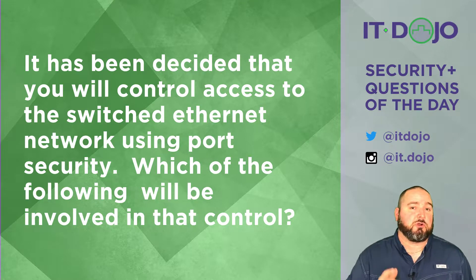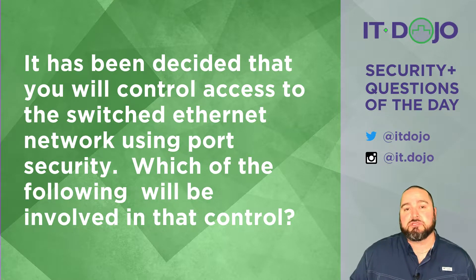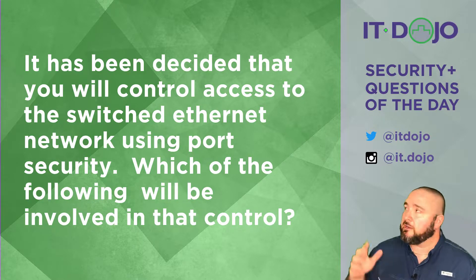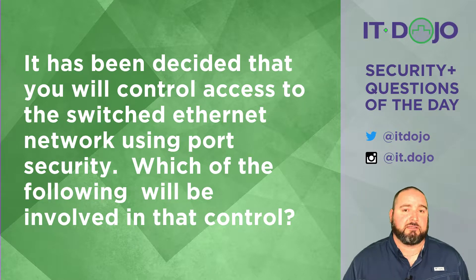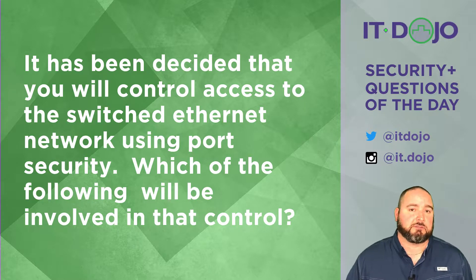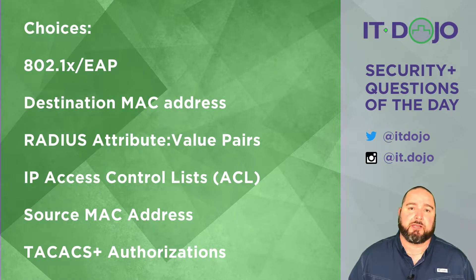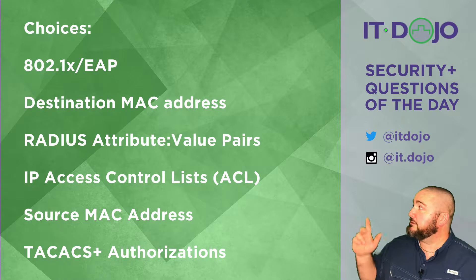Alright, question number one today: it has been decided that you're going to control access to your ethernet switch network using port security. Which of the following items is going to be involved in implementing that particular control? Go ahead and click pause, give those a read, and when you're ready to break it down, let's do it.